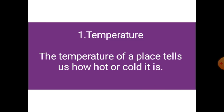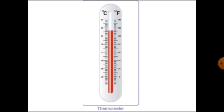The first one is temperature. The temperature of a place tells us how hot or cold it is, and it is measured in degree centigrade. A thermometer is a device used to measure temperature.